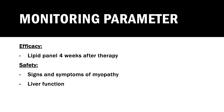For monitoring parameters — efficacy: the patient should have their lipid panel measured 4 weeks after the start of therapy. If cholesterol levels are still high, the patient should increase their dose to the maximum dose or switch to a higher intensity statin. For safety, the patient should look for signs and symptoms of myopathy or rhabdomyolysis, which can include muscle pain. The patient should also have their liver function test to determine whether the medication is toxic or therapeutic.